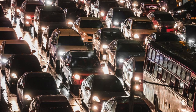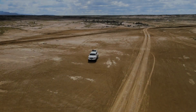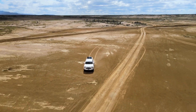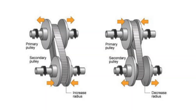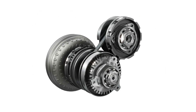Continuously Variable Transmissions, or CVTs, use a system of pulleys and a belt instead of fixed gears. This allows for an infinite number of gear ratios and results in ultra-smooth acceleration.